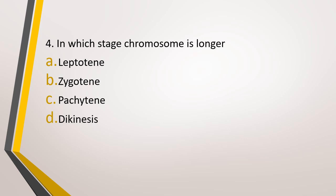Question number 4. In which stage is chromosome longer? Option A: Leptotene, option B: Zygotene, option C: Pachytene, or option D: Diakinesis. The correct answer is option A, in the Leptotene stage. The Leptotene stage is the first stage of prophase 1 and the chromosomes gradually become visible in the Leptotene stage and the compaction of chromosome continues throughout the Leptotene stage.